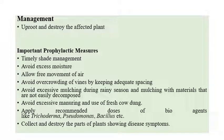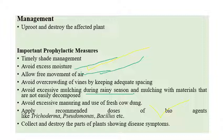For management of Vanilla Mosaic Virus: uprooting and destroying affected plants, along with timely shade management, is very important. Avoid excess moisture and allow free movement of air. Reduce overcrowding of vines, avoid excessive mulching especially during rainy season, and avoid excessive manure application. Application of recommended doses of bio-agents like Trichoderma, Pseudomonas, and Bacillus species can be recommended. Collect and destroy plant parts showing disease symptoms.